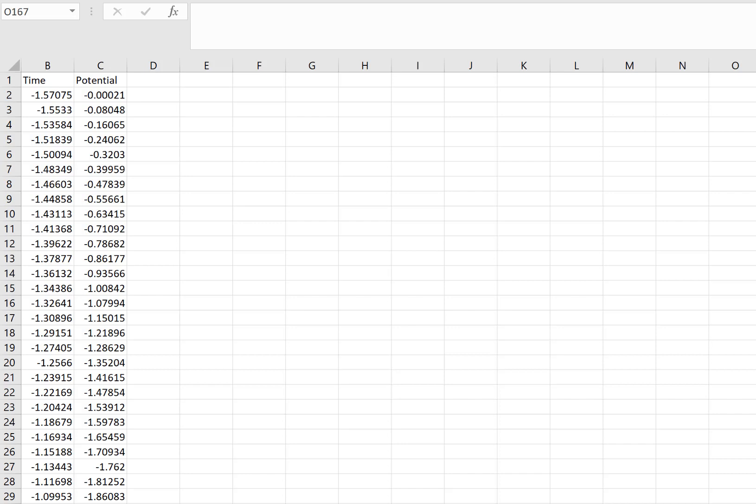You're going to open up the CSV file, the comma separated value file, in Excel or Google Sheets or some kind of spreadsheet program. It'll have time in one column and then the potential for a certain height of a magnet drop, followed by the next height, followed by the next height. I'm just going to use one column here of data to show you how I would do some of the analysis.